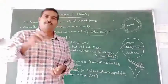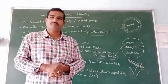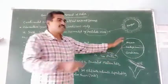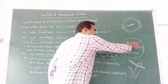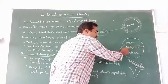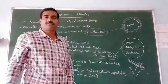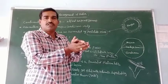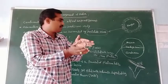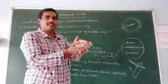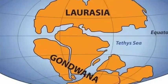200 million years ago, this single supercontinent was separated by the Tethys Sea into two land masses — one is Angara land and another is Gondwana land. The north part is known as Angara land and the south part is known as Gondwana land.